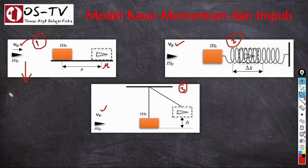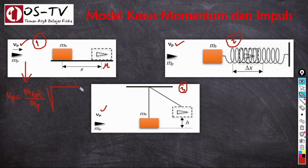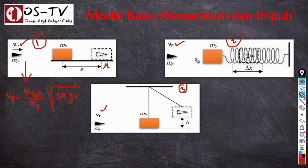Rumus cepat untuk kasus 1 adalah: VP = (m_total / m_peluru) × √(2μGS). Di sini μ adalah koefisien gesekan, G adalah percepatan gravitasi, dan S adalah jarak yang ditempuh balok dari posisi mula-mula.